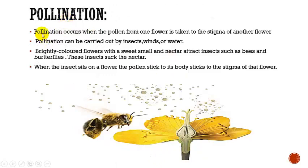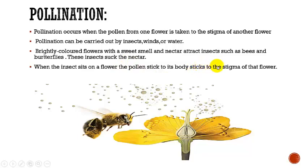Now, pollination. Pollination occurs when the pollen grains from one flower are taken to the stigma of another flower. Pollination can be carried out by insects, wind, or water. Brightly colored flowers with a sweet smell and nectar attract insects such as bees and butterflies. When these insects sit on a flower to suck the nectar, the pollen sticks to their body, and when they sit on another flower, they transfer those pollen grains to the stigma of that flower. In this way, pollination is carried out.